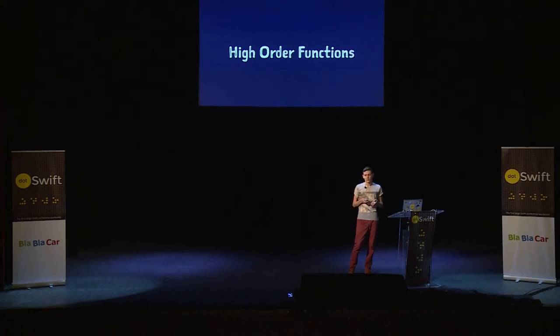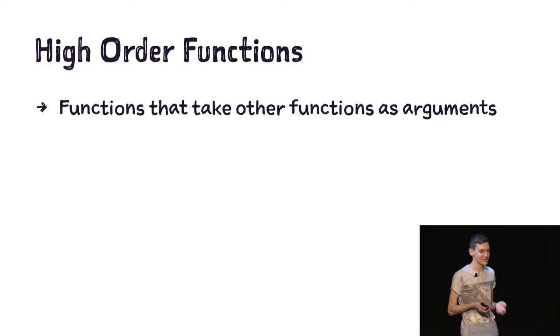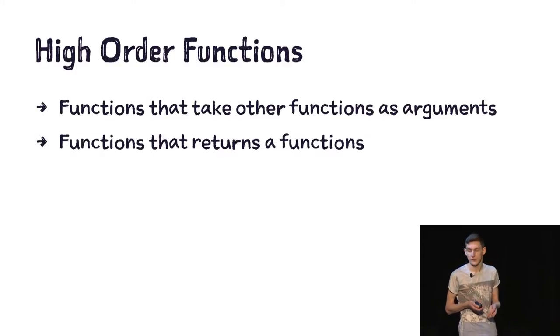One of the building blocks of functional programming is higher-order functions. You might not know what that is, because it's really hard to understand from those three words. A higher-order function is a function that takes another function as an argument, or a function that returns a function. In Swift, everything is a closure, which is an important thing to remember — functions and closures are pretty much identical.